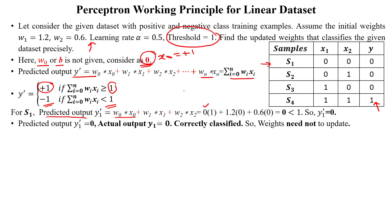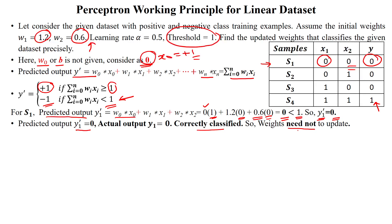For sample number 1, the predicted output is: w0*x0 + w1*x1 + w2*x2 = 0 + 1.2*0 + 0.6*0 = 0. Since 0 is less than 1, the predicted output is 0, which is the negative class. The predicted output is 0 and the actual output is also 0 — both are matching, so the sample is correctly classified. Since it is correctly classified, we do not need to update the weights.